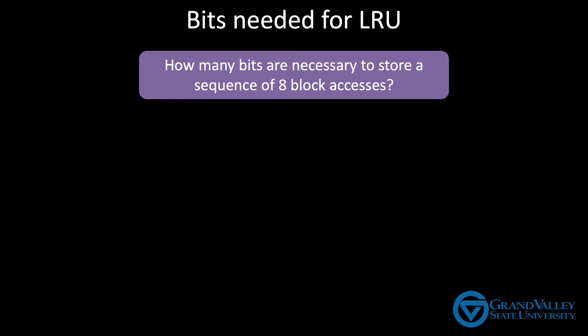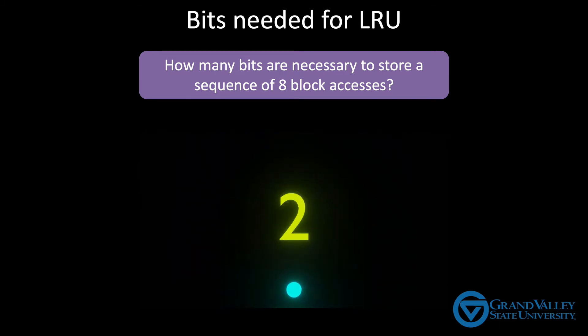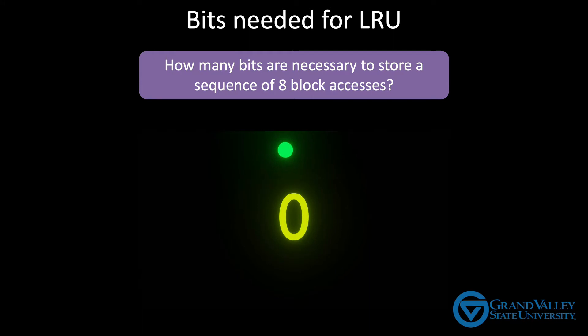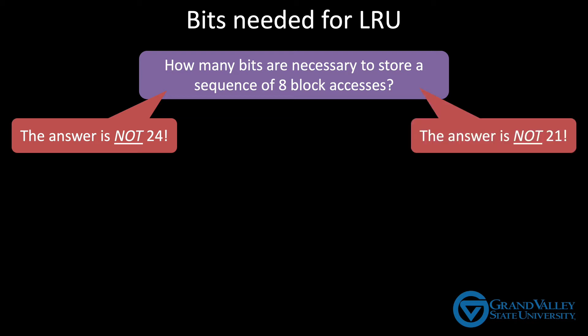So with that in mind, how many bits do we need to store this ordering of eight blocks? The answer is not 24, because you don't have to list all eight blocks. If you list the first seven, you can infer what the eighth one is. But actually, the answer is also not 21. We can do it with 21 bits like I just described, but there are techniques to use even fewer bits.